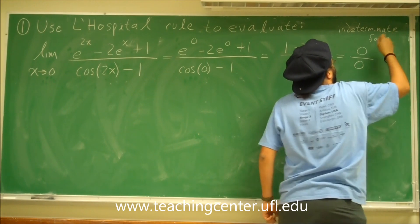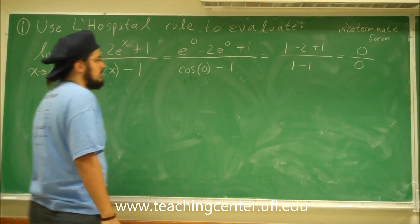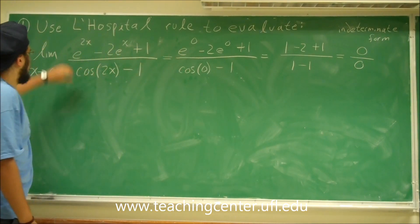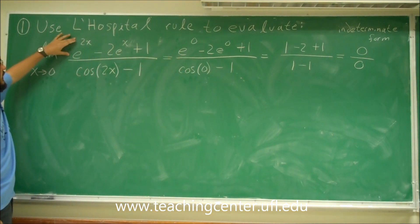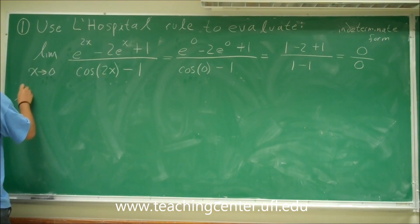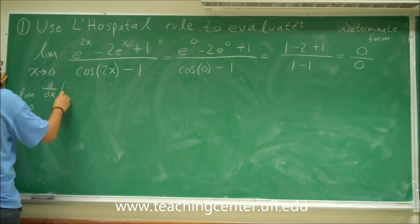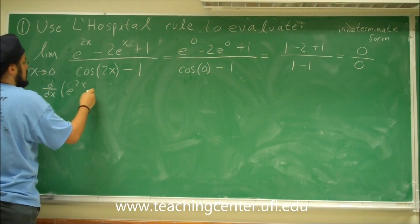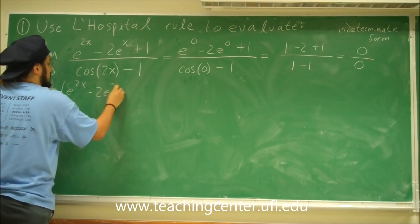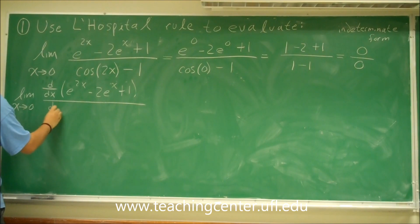This is the exact indeterminate form we want in order to apply L'Hôpital's rule — we have 0 over 0. So we're going to apply L'Hôpital's rule. L'Hôpital's rule states: take the derivative of the numerator, then take the derivative of the denominator, and then apply the limit. So, the limit as x approaches 0 of d/dx of e to the 2x minus 2e to the x plus 1, divided by d/dx of cosine 2x minus 1.